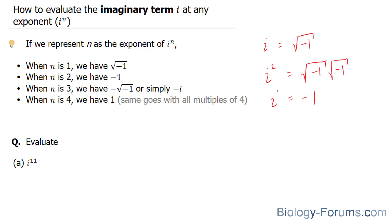So, i to the power of 2 is equal to negative 1. If we were to cube the i term, we would end up with the square root of negative 1 times the square root of negative 1 times the square root of negative 1.